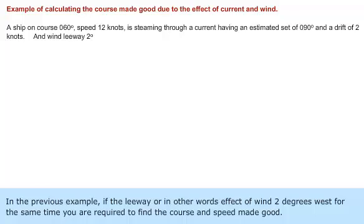In the previous example, if the leeway, or in other words effect of wind, was 2 degrees west for the same time, you are required to find the course and speed made good.